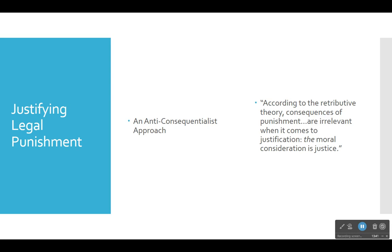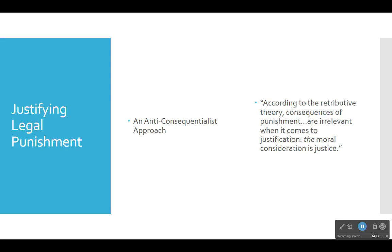Consequences of punishment — whether having this policy will deter murders in the future, whether it will bring about a greater overall balance of happiness over unhappiness — all of that is irrelevant to Primoratz. He would argue that even if the consequences are bad, capital punishment is still morally required. The only relevant considerations are what justice requires in light of what happened to the victim. Whether capital punishment deters capital crimes or not, retribution — giving the criminal what he deserves — is an independent moral value and justification.